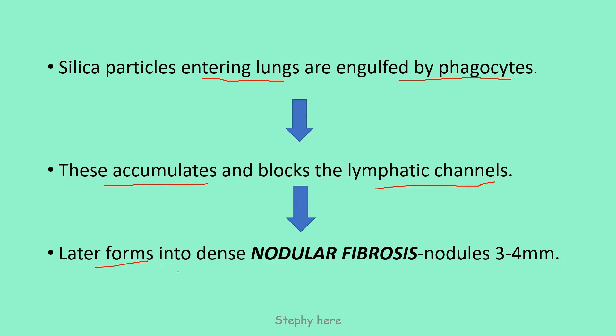Later, it forms into dense nodular fibrosis, with each nodule ranging between 3 to 4 millimeters, formed in the lungs.